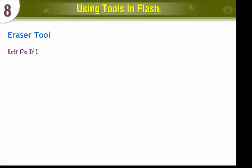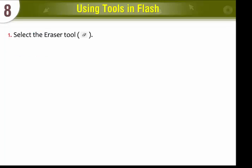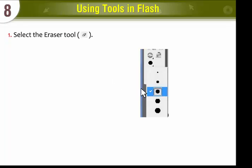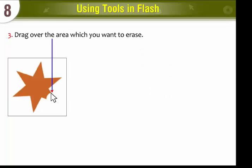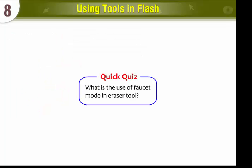Eraser Tool. To use the Eraser Tool, select the Eraser Tool. From the Options box, select the Eraser Shape and its Thickness. You can also use Faucet Mode. Drag over the area which you want to erase. Quick Quiz: What is the use of Faucet Mode in the Eraser Tool?